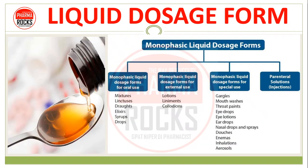अब यही classification को और हम deep में देखें — तो monophasic liquid dosage form के अलग-अलग हम classify कर सकते हैं. Like, monophasic liquid dosage form for oral use — उसको oral cavity के लिए ही use करेंगे. Like mixture है, linctuses है, drop preparation है, elixir, syrup, drops वगेरा — वो हम oral use करते हैं. उसके बाद ऐसे liquid dosage forms हैं monophasic के जो external preparation के — like आप कोई lotion use करते हैं, liniment use करते हैं, colorations है — तो वो सब external use के लिए हैं.